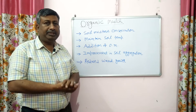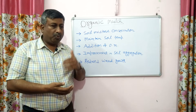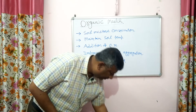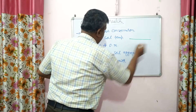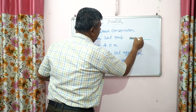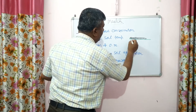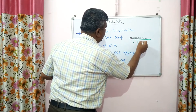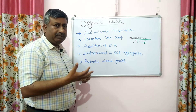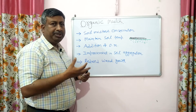When we use crop residue, leaves, etc., there is soil moisture conservation. So why is there soil moisture conservation? When we apply organic mulch over the soil surface — for example, applying organic mulch like leaves and shoots — the moisture in the soil remains for a longer period. This leads to increased plant growth and yield, proper root growth, and proper availability of moisture.